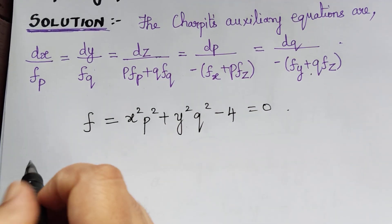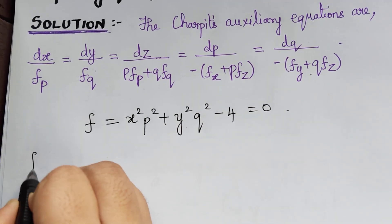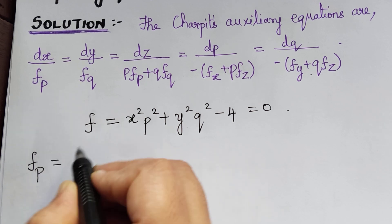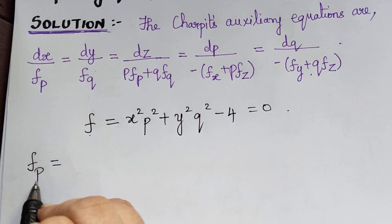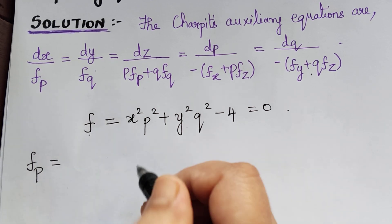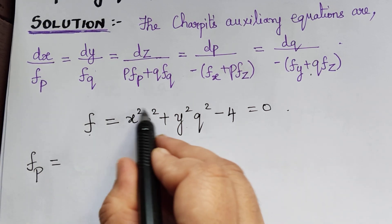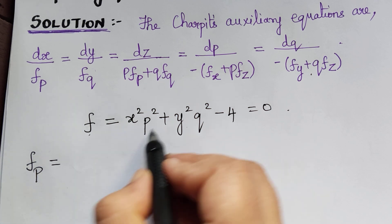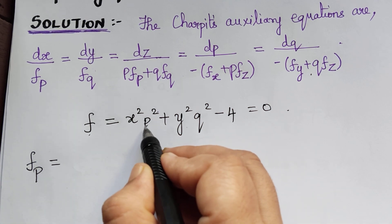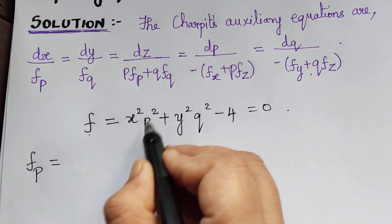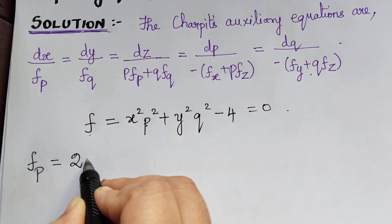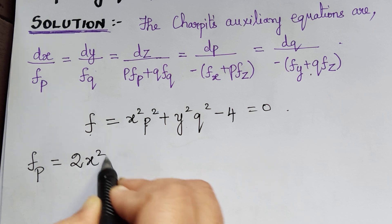From this we can find Fp, that is the partial differentiation of F with respect to p. Here we have p² and its differentiation is 2p, so we get Fp = 2x²p.